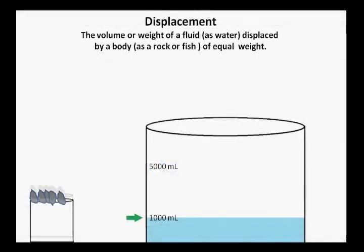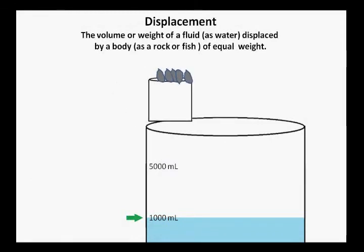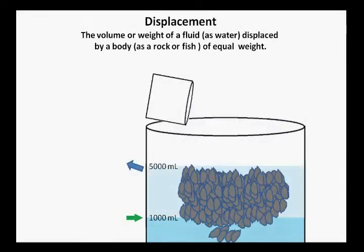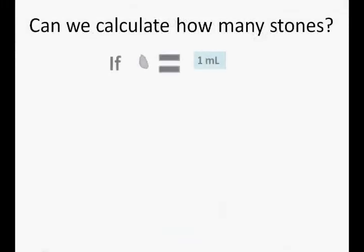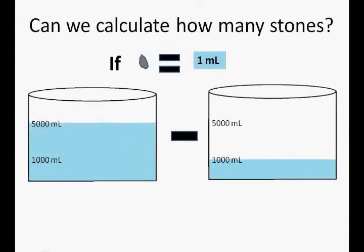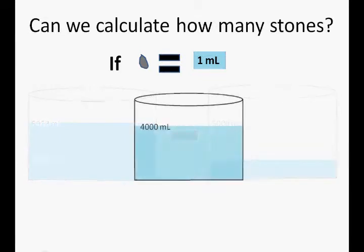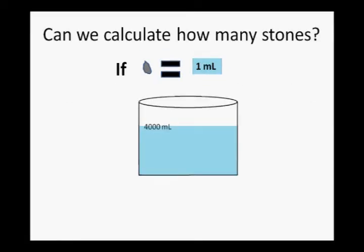Now, we will fill a larger beaker with 1,000 milliliters. We add stones to the water until the level reads 5,000 milliliters. How many stones did we add? If one stone displaces 1 milliliter, we subtract our starting water level, 1,000 milliliters, from our ending water level, 5,000 milliliters. In our example, we displaced 4,000 milliliters with our stones.